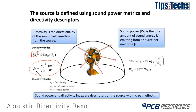The directivity of the source tells us over which angles the source will radiate its highest sound pressure. Directivity can be measured by rotating a source and using a fixed microphone position, or as we'll demonstrate here, using a fixed source and a rotating microphone around it.